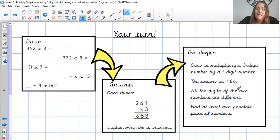Okay your task today then. There are 5 do it questions. Very similar. They will all regroup in that tens column today. Just make sure you do that formal written method and that you line up your numbers correctly and use a ruler for your equals lines. Then you've got your go deep Coco problem. Coco has made a mistake. Explain why she is incorrect and give me the right answer would be brilliant. And finally your go deeper today. Coco is multiplying a three digit number by a one digit number and the answer is 486. All of the digits of the two numbers are different. Find at least two possible pairs of numbers. Huge huge good luck with that one.